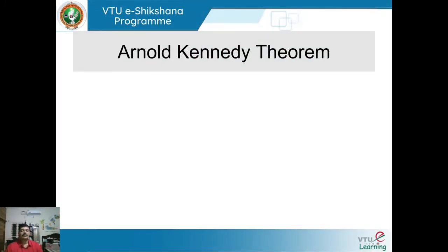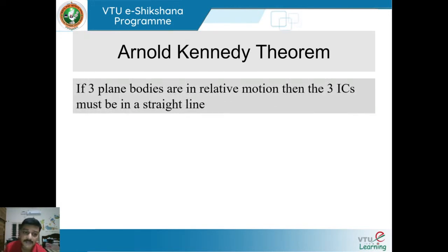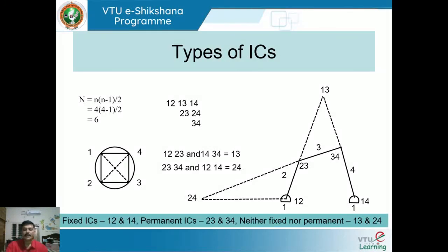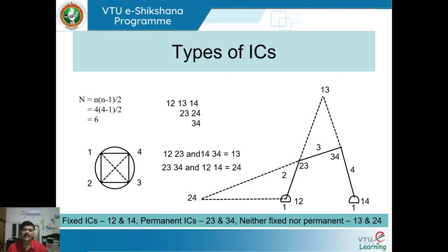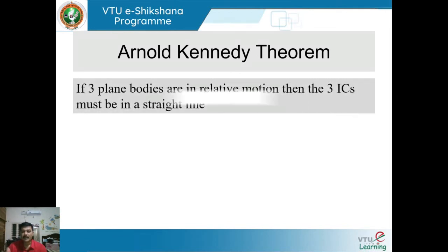Next, the Arnold-Kennedy theorem. The statement is: if three plane bodies are in relative motion, then the three instantaneous centers must lie in a straight line. This is exactly what we applied when finding IC 1,3 and IC 2,4 — the three relevant ICs must be collinear for the construction to work.